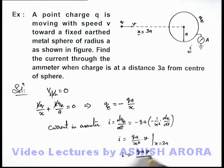The value of current we are getting is qav by 9a square. This a gets cancelled out, it'll be qv by 9a. That'll be the answer to this problem.